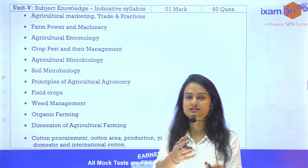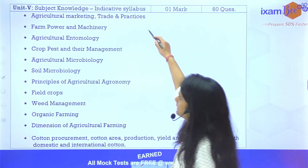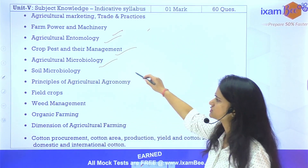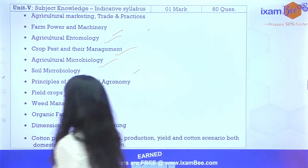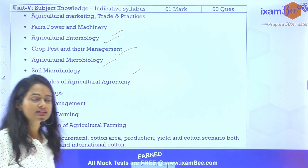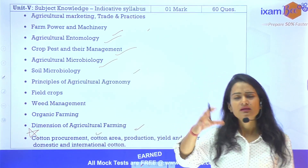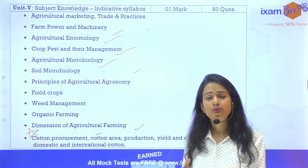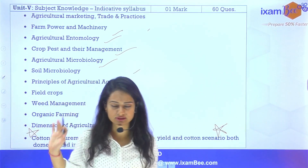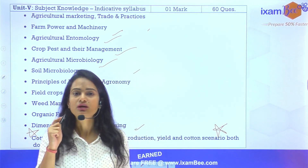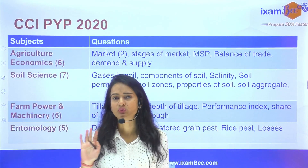Unit 5 hai jo BSc Agriculture wale students ke liye important hai — agriculture se, subject knowledge se. Isme alag-alag topics hai: marketing, farm power, entomology, crop pest, microbiology, soil microbiology, weed management, organic farming, agronomy se related. Iske alawa, jo zyada important dhyan dene wali cheez hai woh hai cotton — kyunki CCI ka exam hai, toh obviously they'll ask about cotton. Cotton ka poora procurement, MSP, production scenario all over the world, import-export kitna hota hai India se — ye sab bhi aapke liye important hai. Exam ki date abhi tak declare nahi hui hai, lekin phir bhi you have to start preparing.